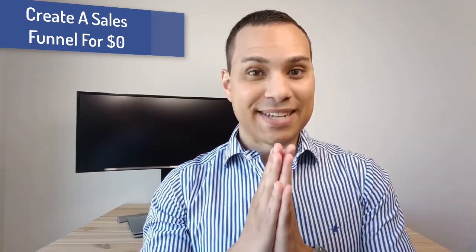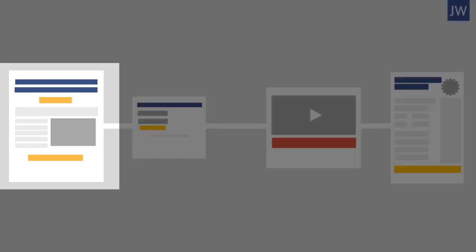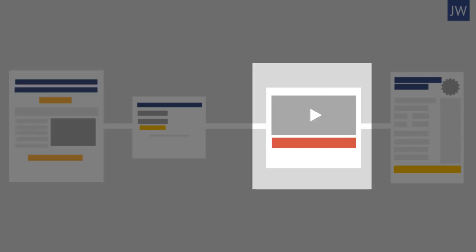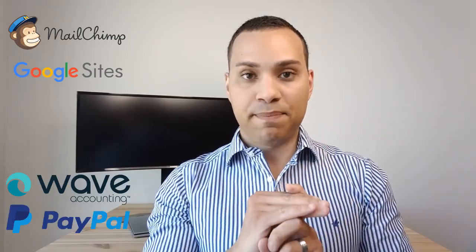How are we going to make this happen? It's going to be a super basic sales funnel that essentially consists of an opt-in page, an immediate VSL or video sales letter, and then a payment page or payment gateway. We're going to do this using all free software. We're going to use Mailchimp, Google Sites, and then Wave Accounting or a PayPal pay-me link. All we need is a couple of web pages and a way to email to get our funnel off the ground.